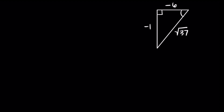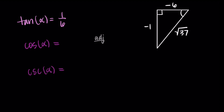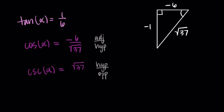Using the completed triangle with sides negative 1, negative 6, and √37: cosine of alpha is adjacent over hypotenuse, which is negative 6 over √37. Cosecant is hypotenuse over opposite, so √37 over negative 1, which simplifies to negative √37. Those are our missing trig values. That covers the first type of problem; in the next video I'll go through the second type — one side length and one angle. Thanks for watching!